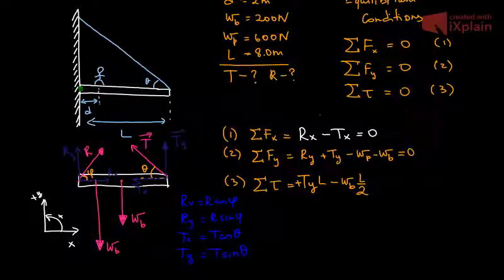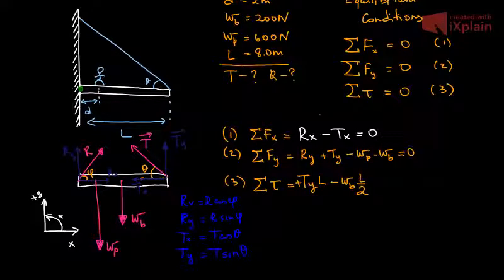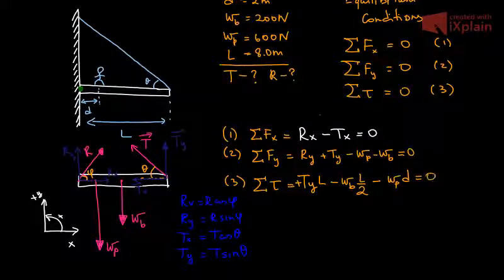And then the weight of the person — I have a mistake here, I wrote beam but it should be person. The weight of the person also provides a clockwise, negative torque: minus weight of the person times the distance D. The full torque equation equals zero.